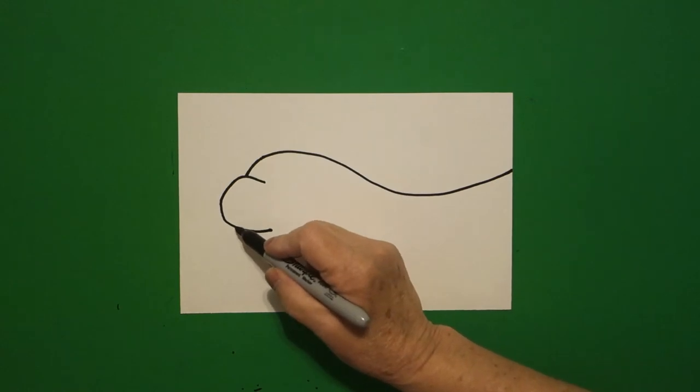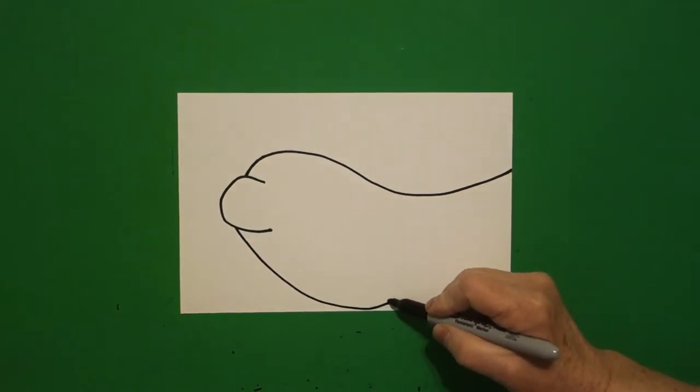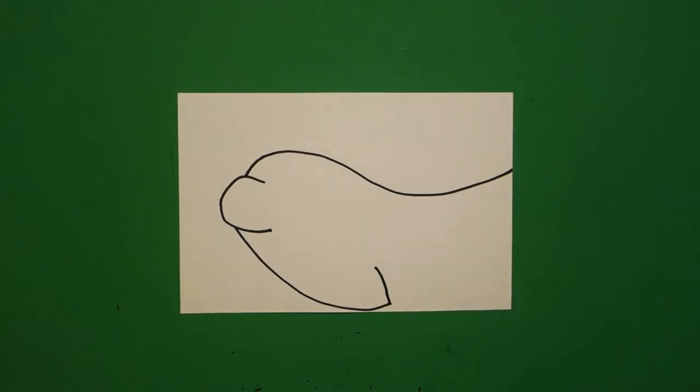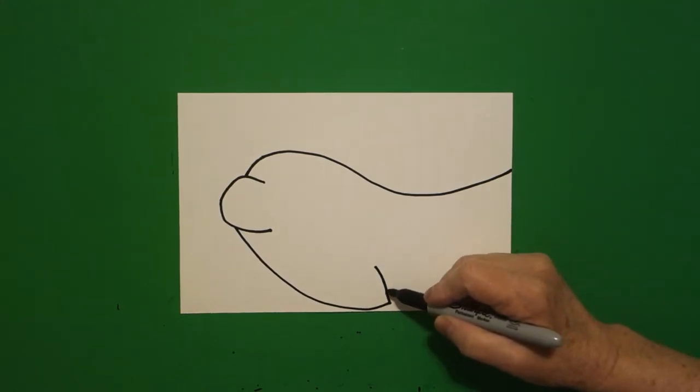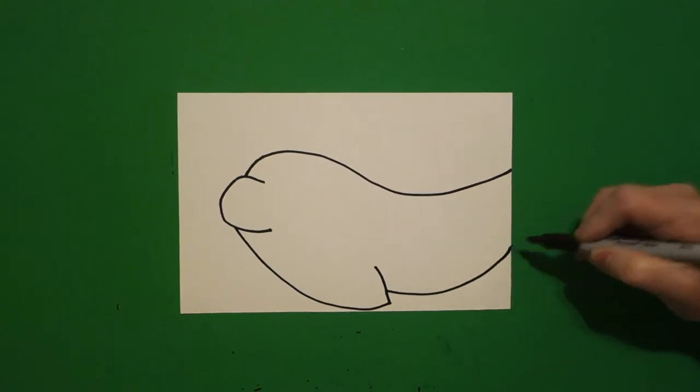Right about here, I'm going to draw a curved line down, curved line up, leave it floating. Come back to about here, curved line out, off the page.